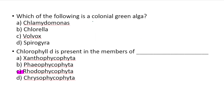Which of the following is a colonial green algae? Answer: Option C, Volvox. Volvox is an example of colonial green algae.